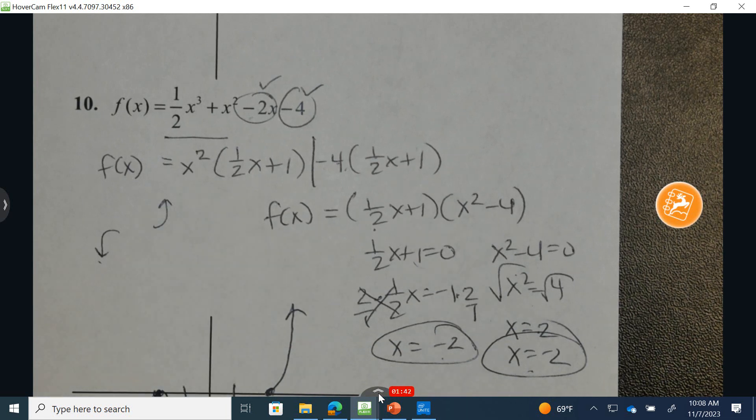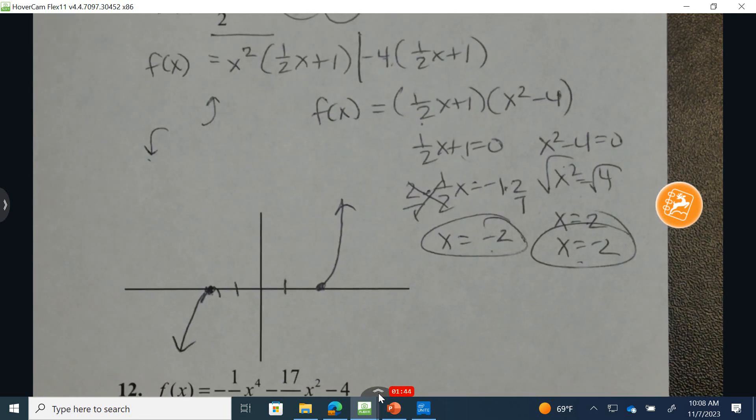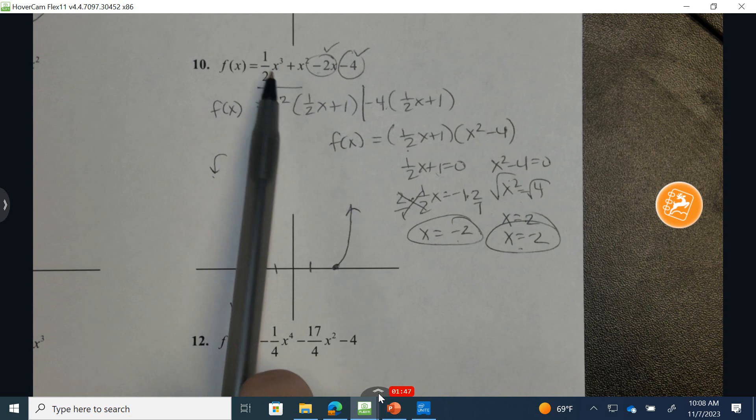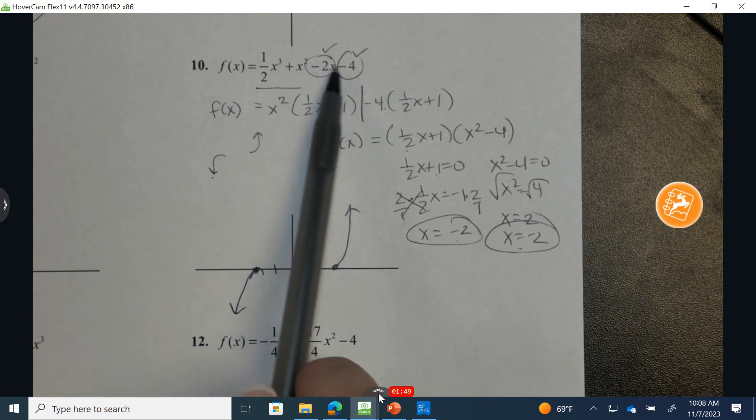And then we can also see that in order to identify the y-intercept, I would plug in 0 for the x's. So this is 0, 0, 0, minus 4.